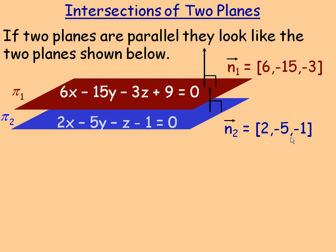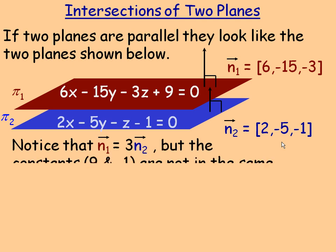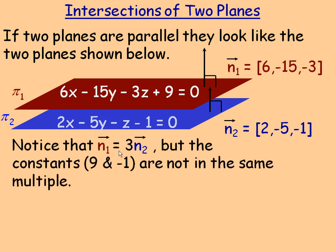Notice that these two normal vectors are multiples of one another. Specifically, normal vector 1 is 3 times normal vector 2 — multiply this by 3 and you get that one exactly. So if those two normal vectors are multiples of one another, that means the normal vectors are parallel, and since they're both perpendicular to each plane, the two planes have to be parallel.